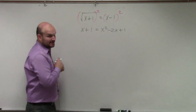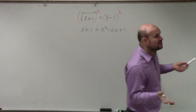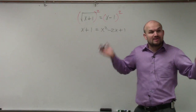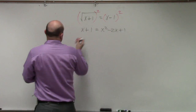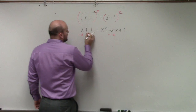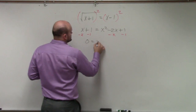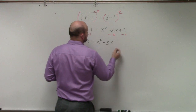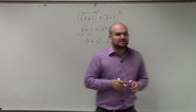So now we have a quadratic. You're familiar with quadratics — when we talked about solving quadratics, one thing we always made sure to do was set our quadratic equal to 0. So I'm going to subtract an x on both sides and subtract a 1 on both sides. So I have 0 equals x squared minus 3x.